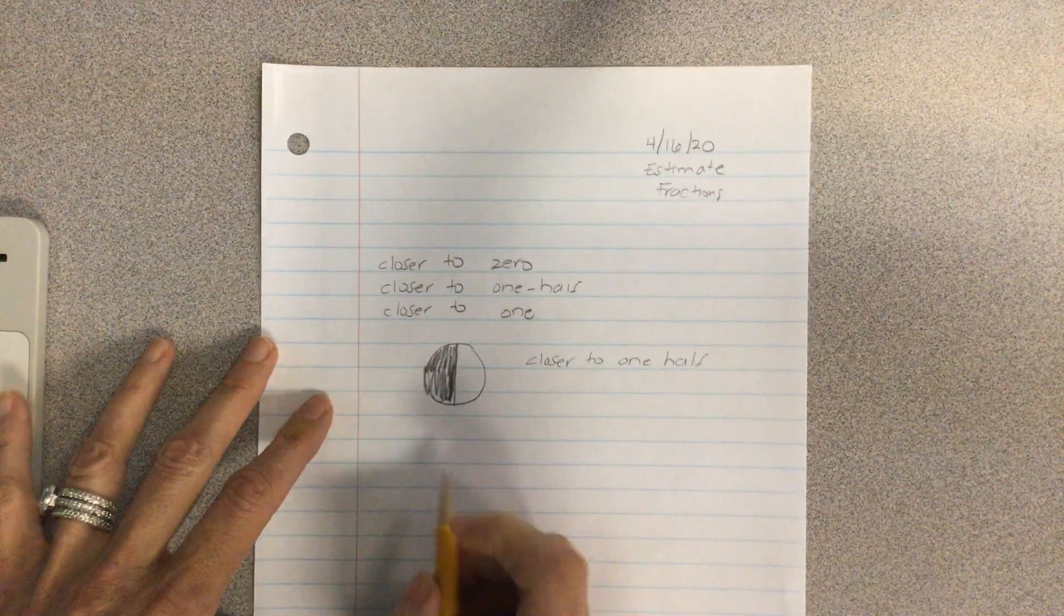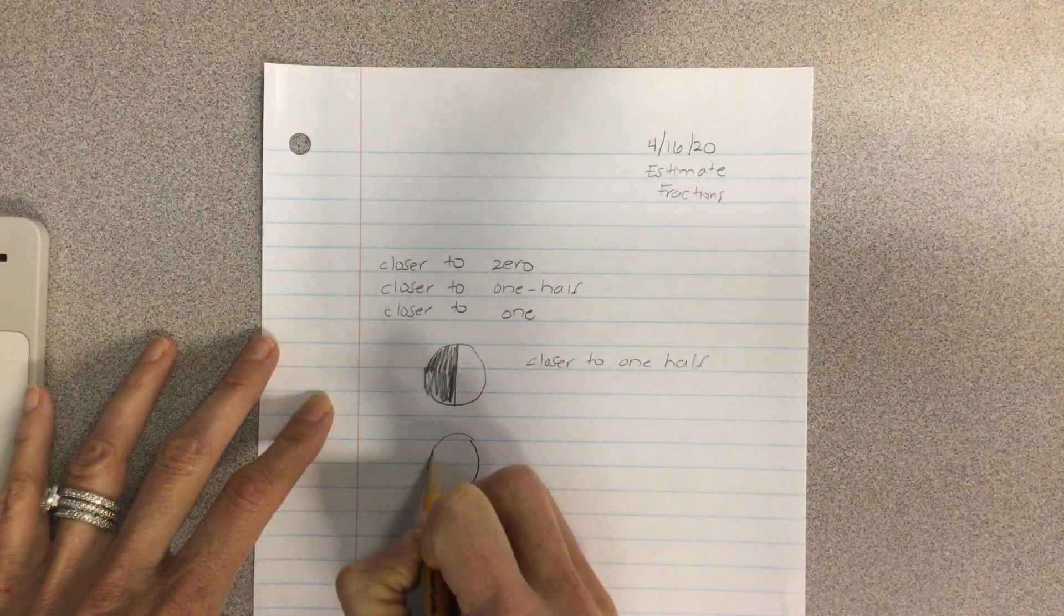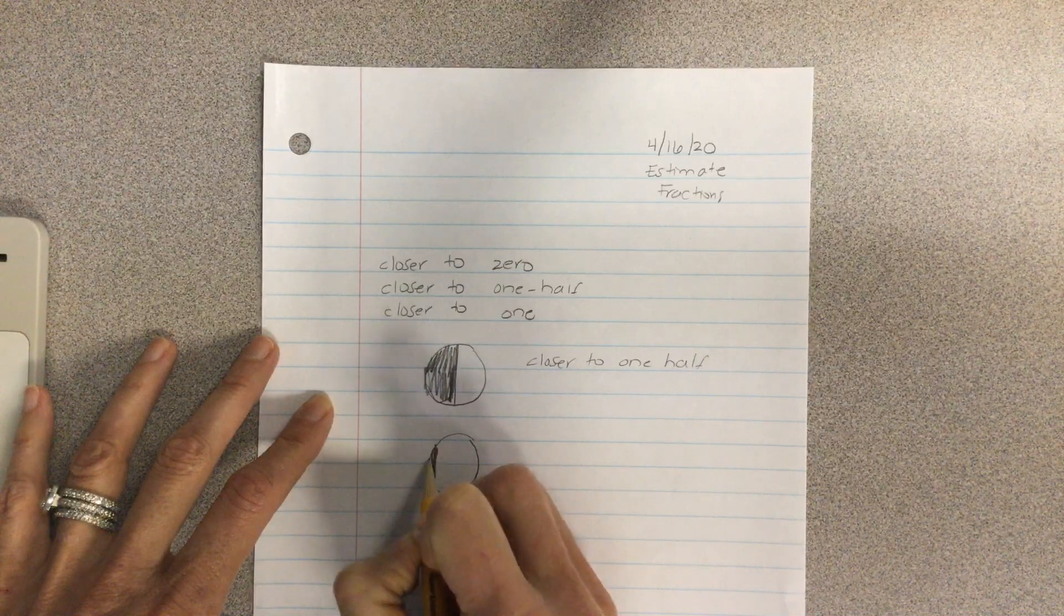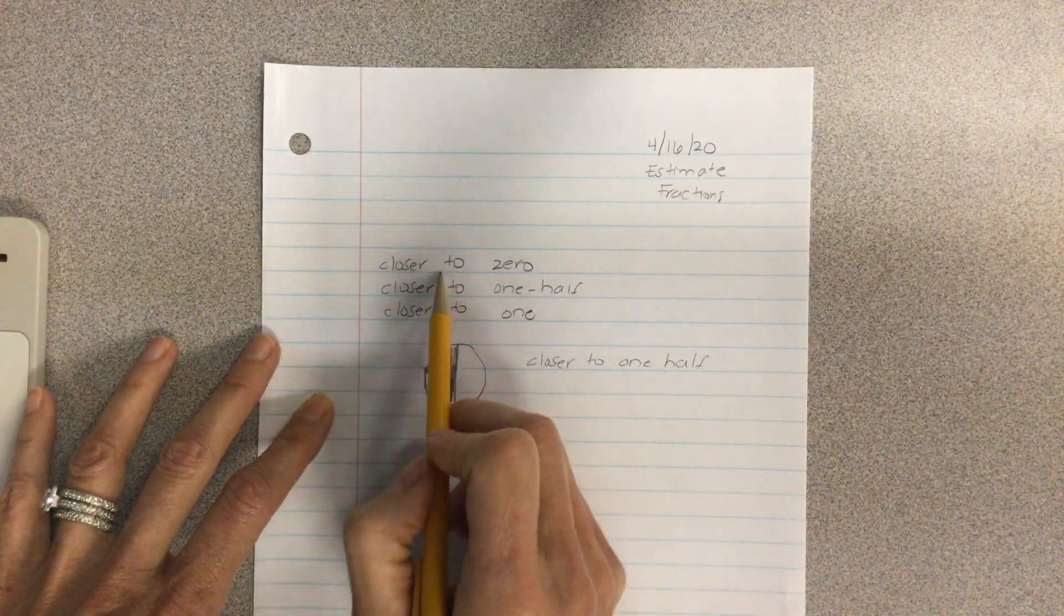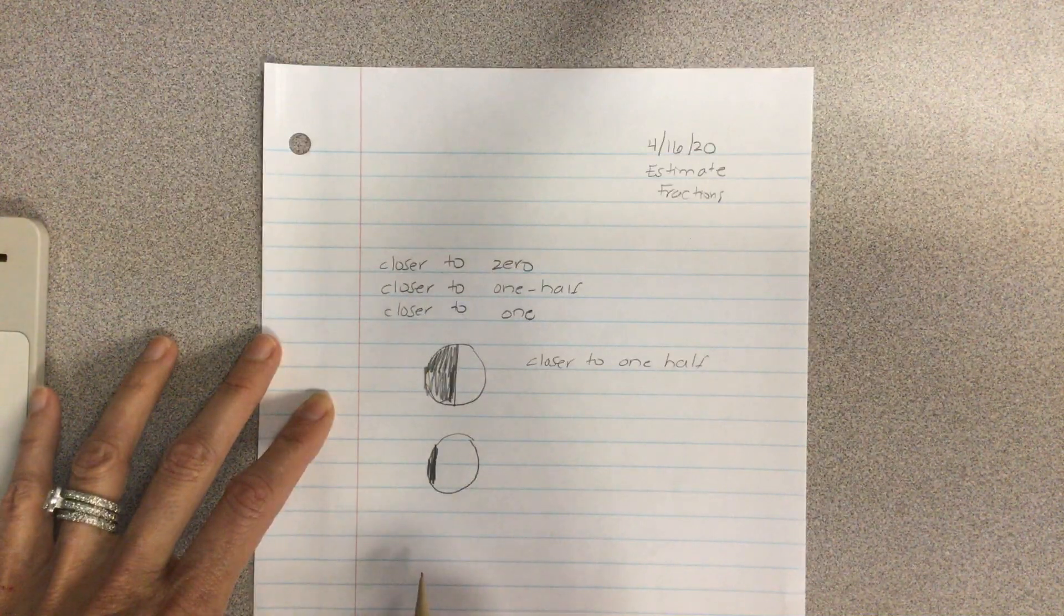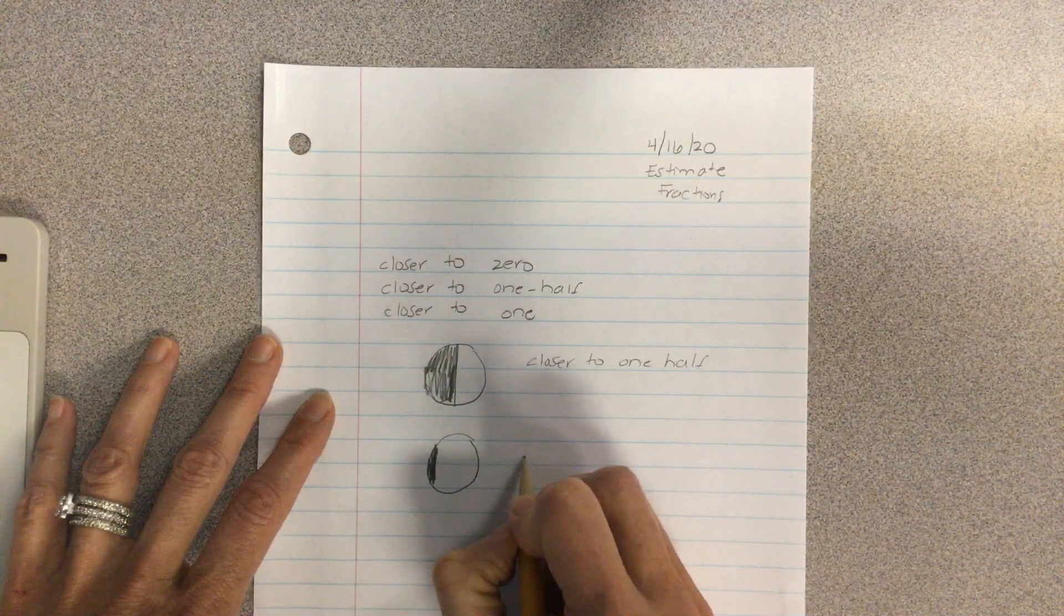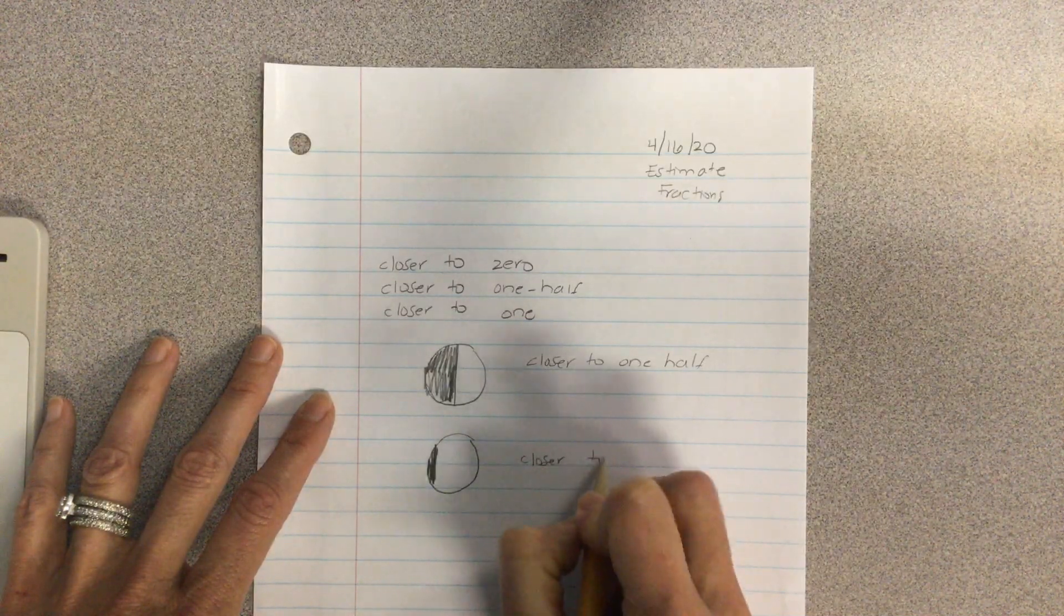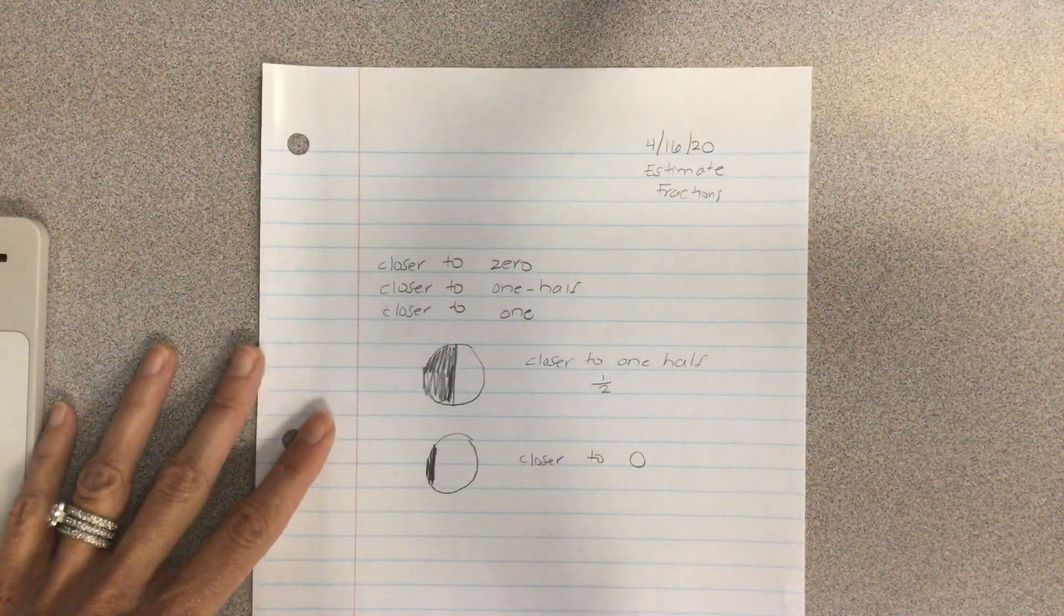What if you had another circle, and this much was shaded? Is that going to be utilizing the same rules, closer to zero, closer to one half, or closer to one? Yes, the shaded portion is going to be closer to zero, and this one we can also think of as one half, as the fraction.